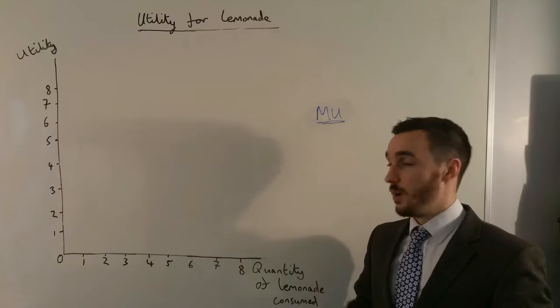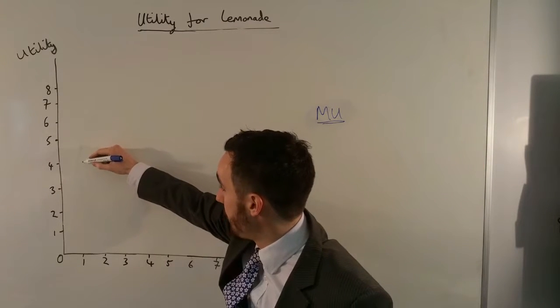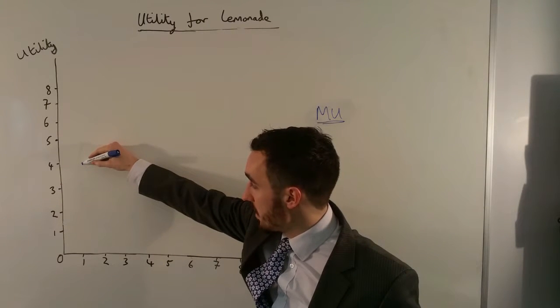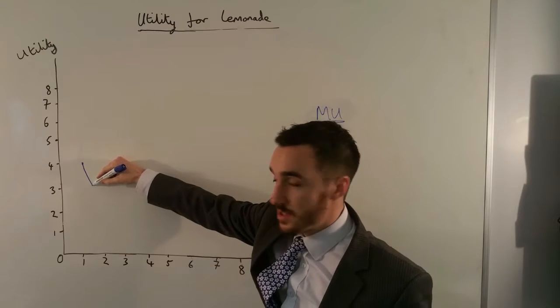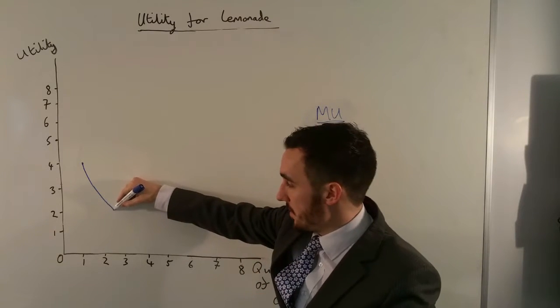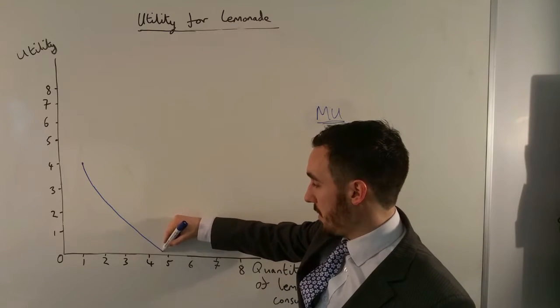My marginal utility therefore of consuming one glass of lemonade maybe is around four, let's say, and then for my next glass, so for consuming my second glass, I might get a little bit less utility. And then consuming my next glass, so my third glass gives me less, you know, each time, and my fourth and my fifth, it gives me less.